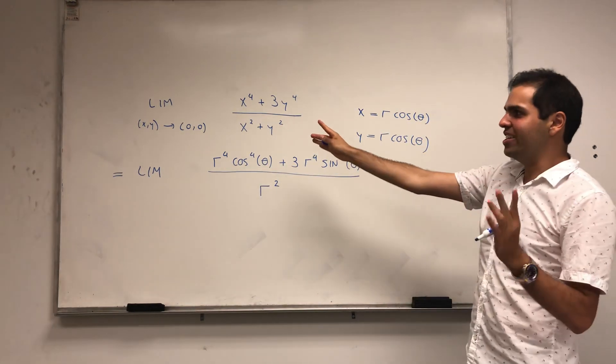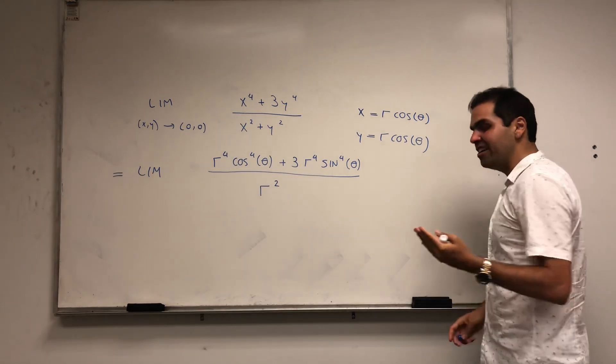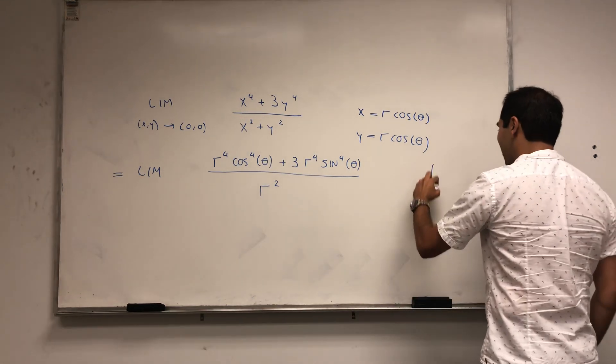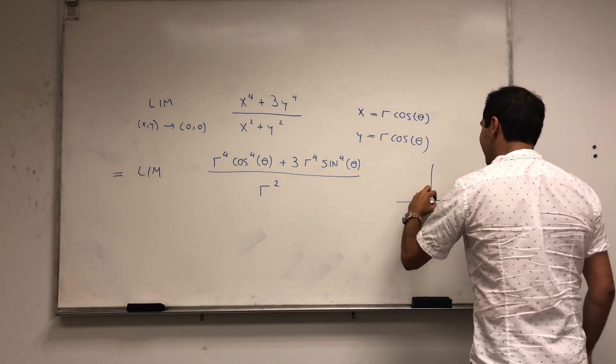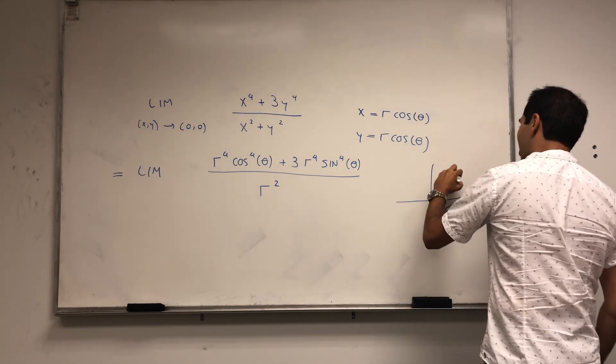Now the question is, what goes to 0? And you might be very tempted to say, hey, r and theta go to 0. But that's not quite true, because you have (0,0). This is r theta.